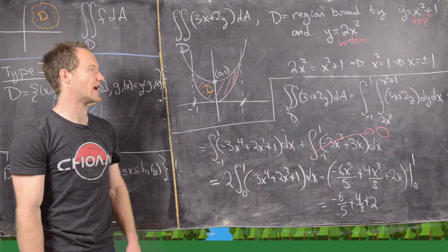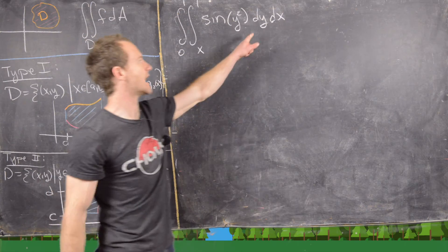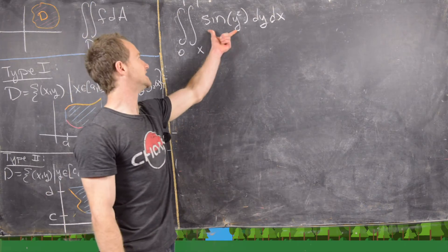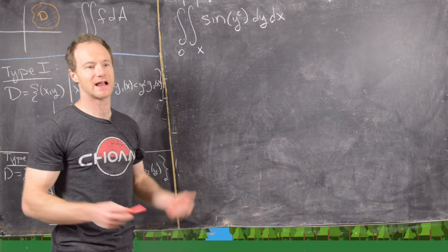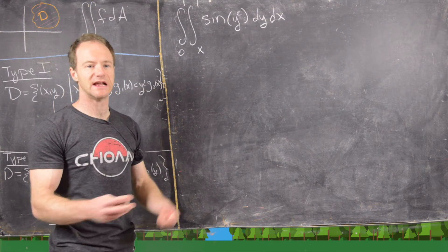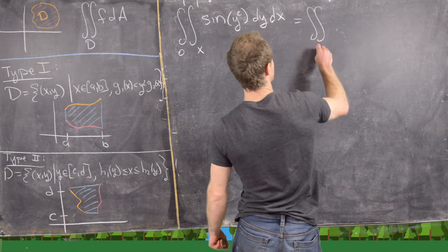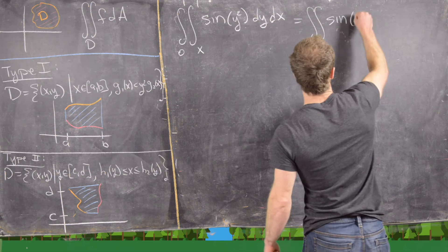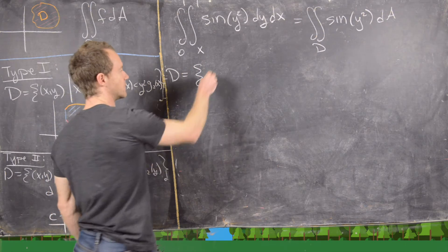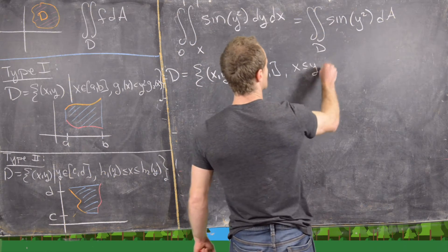The next example appears to be a Type 1 integral with the dy integral on the inside and the dx integral on the outside. However, we can't take the inner antiderivative because sin(y²) is a non-elementary function — it has no nice closed-form antiderivative. So we rewrite it as a double integral of sin(y²) dA, where the region d is all (x, y) with x from 0 to 1 and y from x to 1.